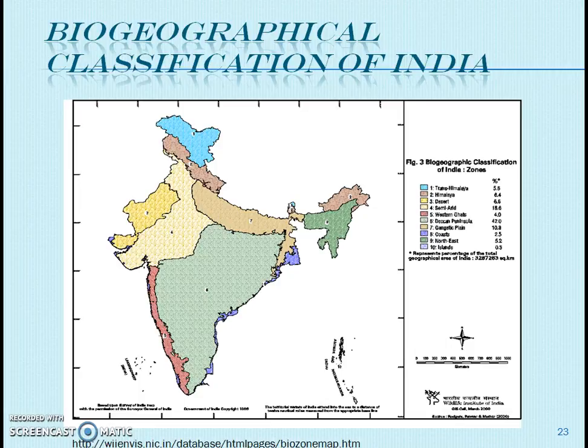The Islands region includes the Andaman, Nicobar, and Lakshadweep Islands. The last region is the Coast, which includes a relatively narrow and very long coastal line from Gujarat to Kanyakumari on the west side, and the Sundarbans east coast on the right side, with a total coastline length of approximately 5400 km.